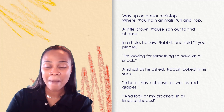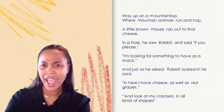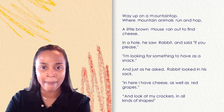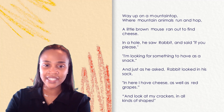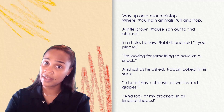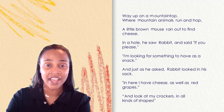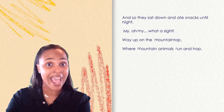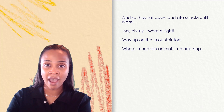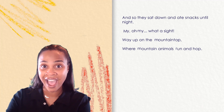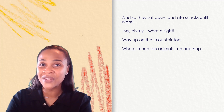Way up on a mountain top where mountain animals run and hop, a little brown mouse ran out to find cheese. In a hole he saw Rabbit and said if you please, I'm looking for something to have as a snack. And just as he asked, Rabbit looked in his sack. In here I have cheese as well as red grapes. And look at my crackers in all kinds of shapes. And so they sat down and ate snacks until night. My oh my what a sight. Way up on that mountain top where mountain animals run and hop. Wow, there were lots of words that began with the letter M and R, and you touched your nose every time.